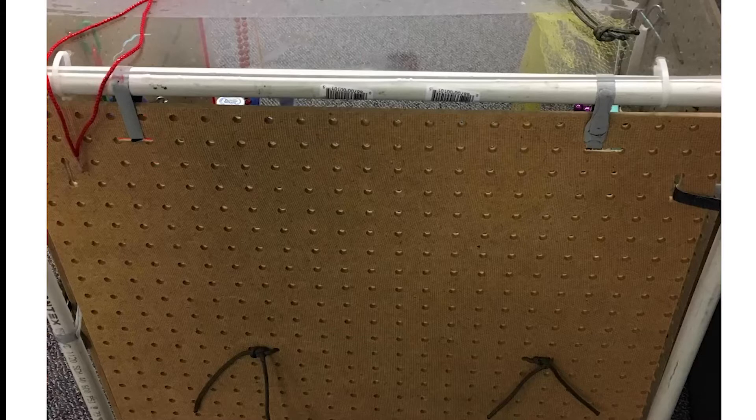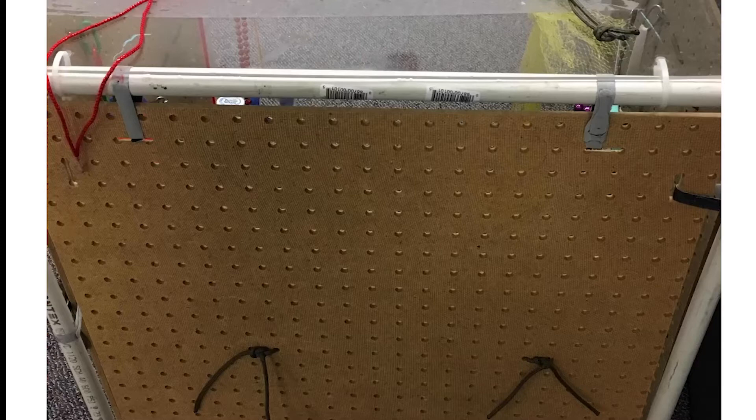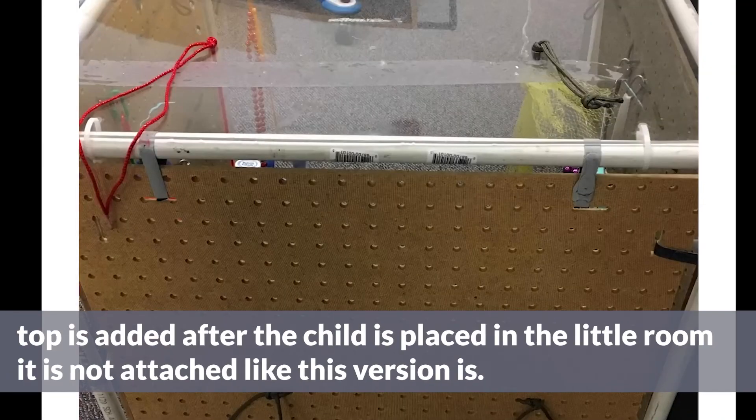This specific style, the PVC pipes, the walls, and the plexiglass were all attached together using those velcro strips. Dr. Nielsen's version of the little room, the plexiglass top actually is added afterwards.